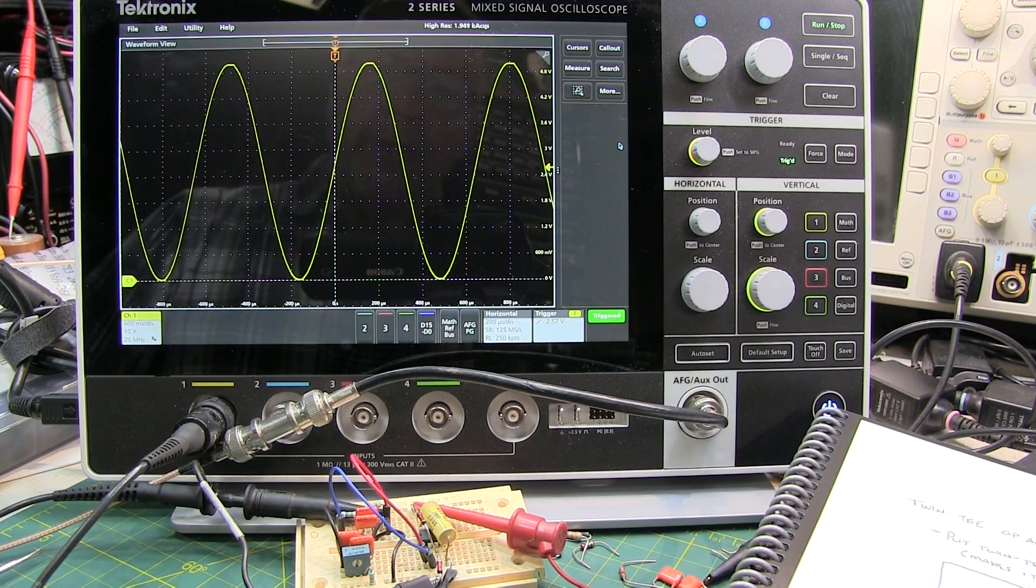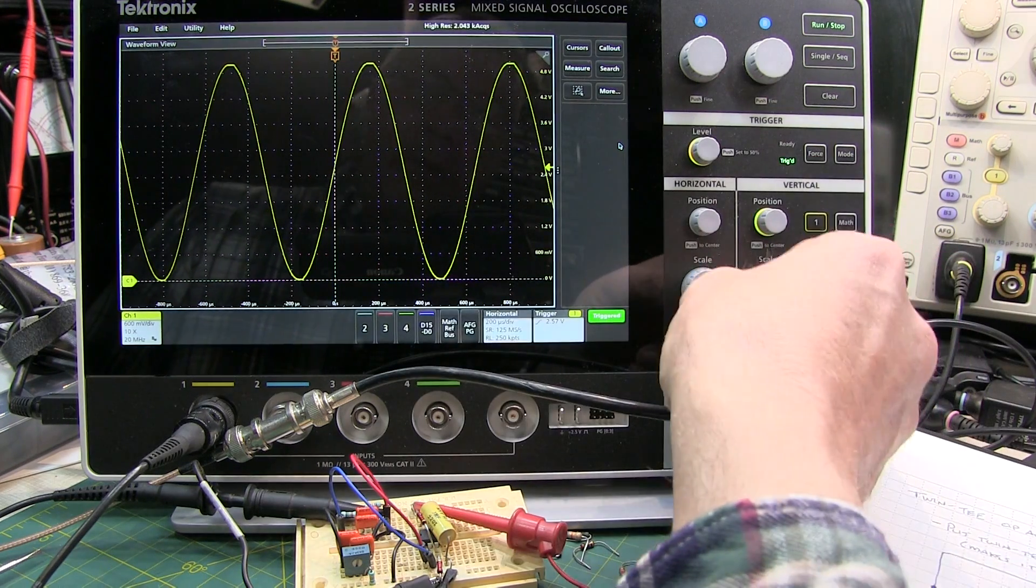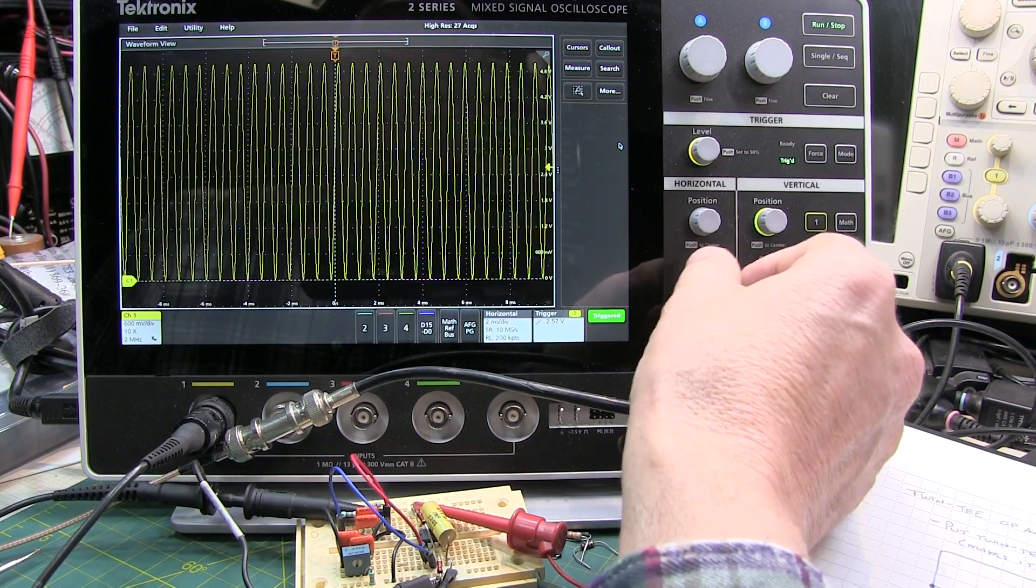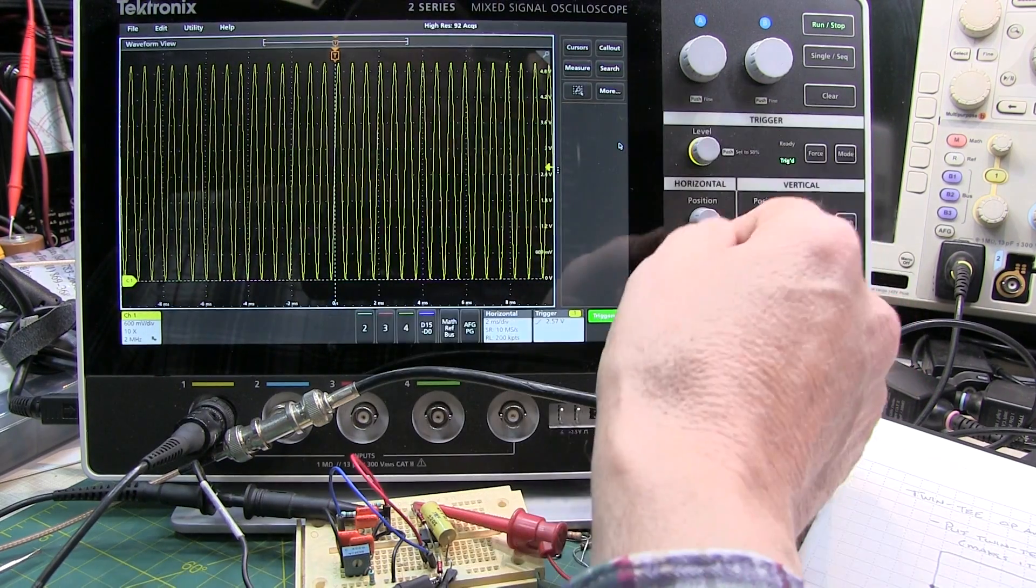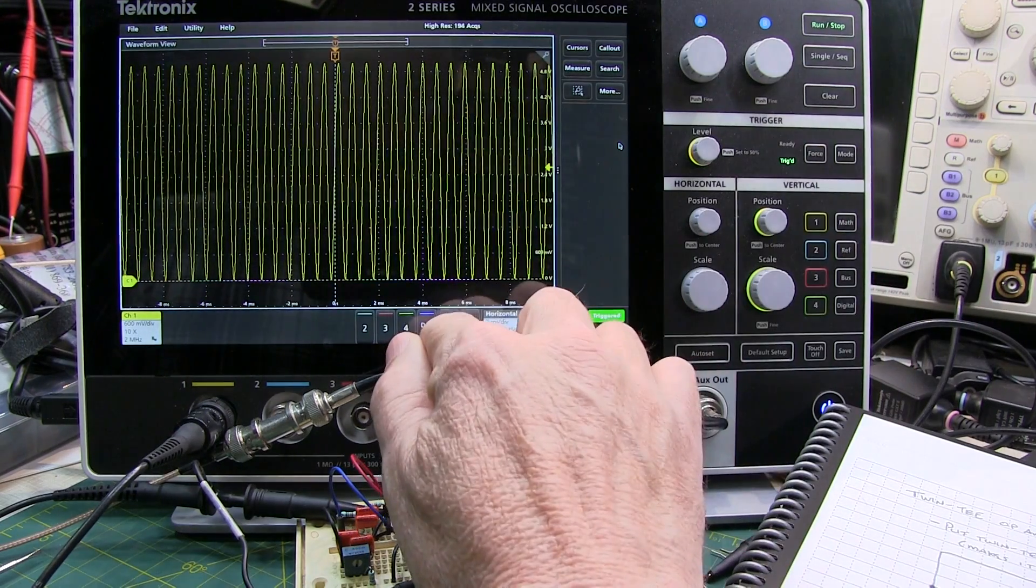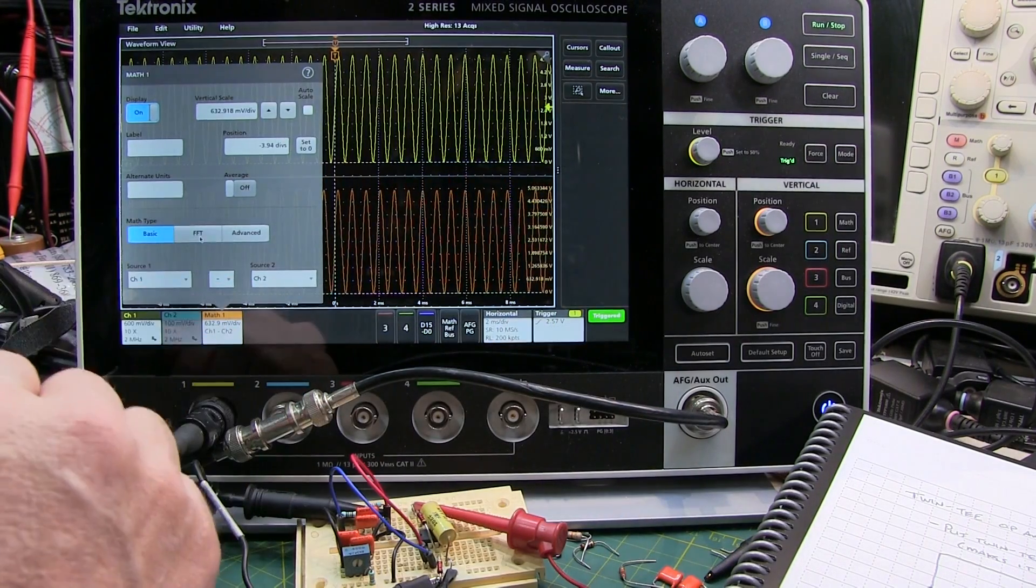I thought the first thing we'd do is take a look at how to set up the FFT. I typically like to have 20 or 30 cycles on the screen to get decent resolution in the FFT result for a given waveform. So let's just adjust the time base to get that, and I'll add a new math channel here and tell that math channel to be an FFT.